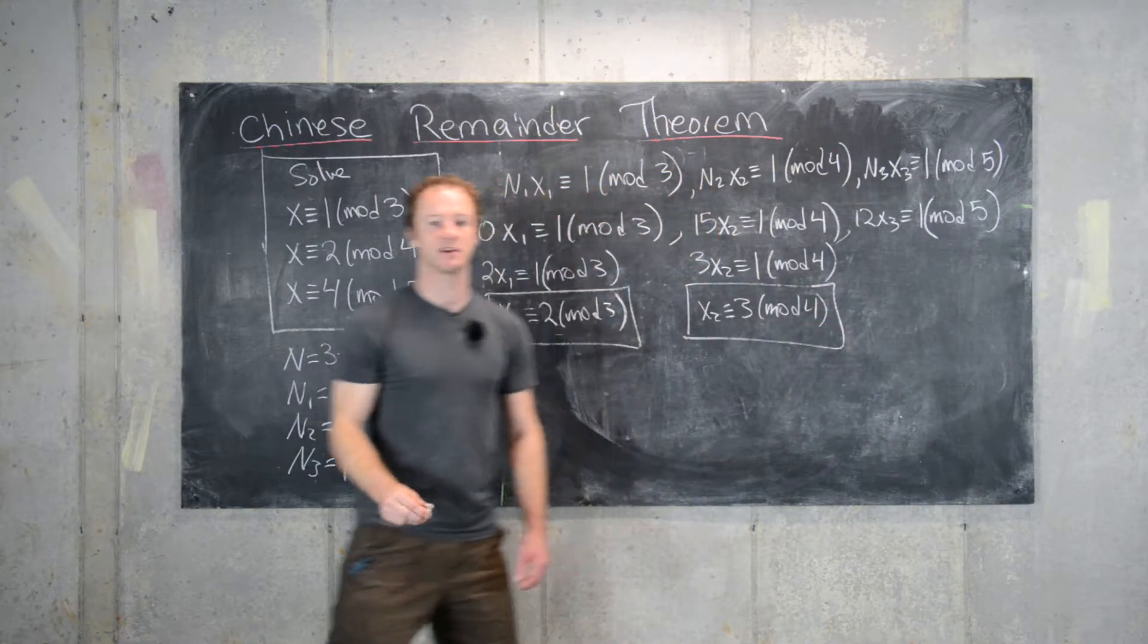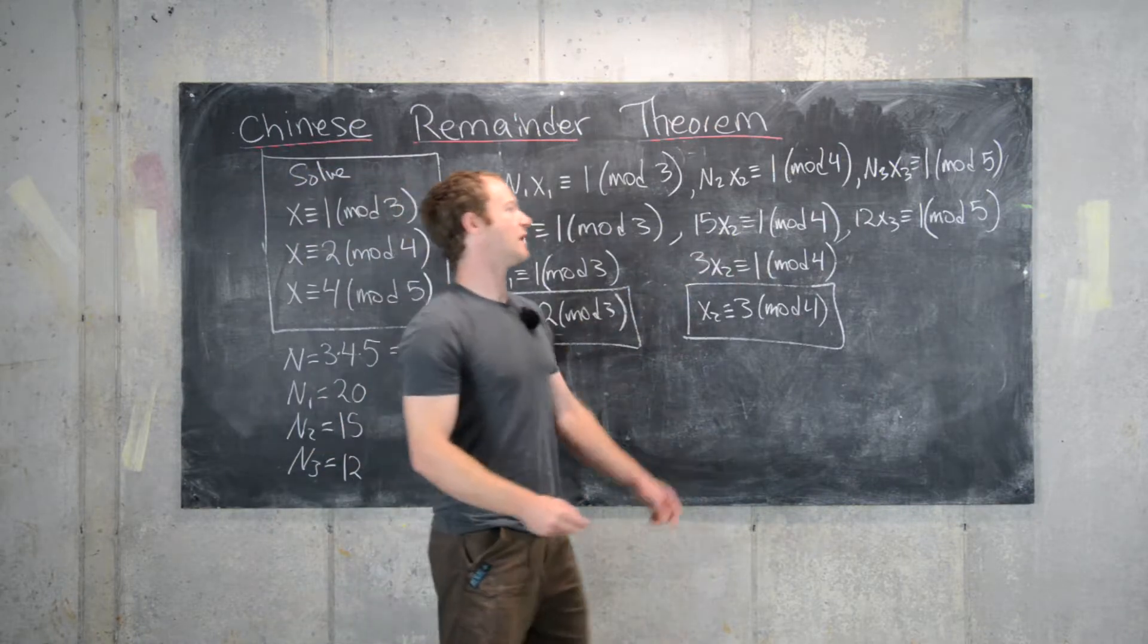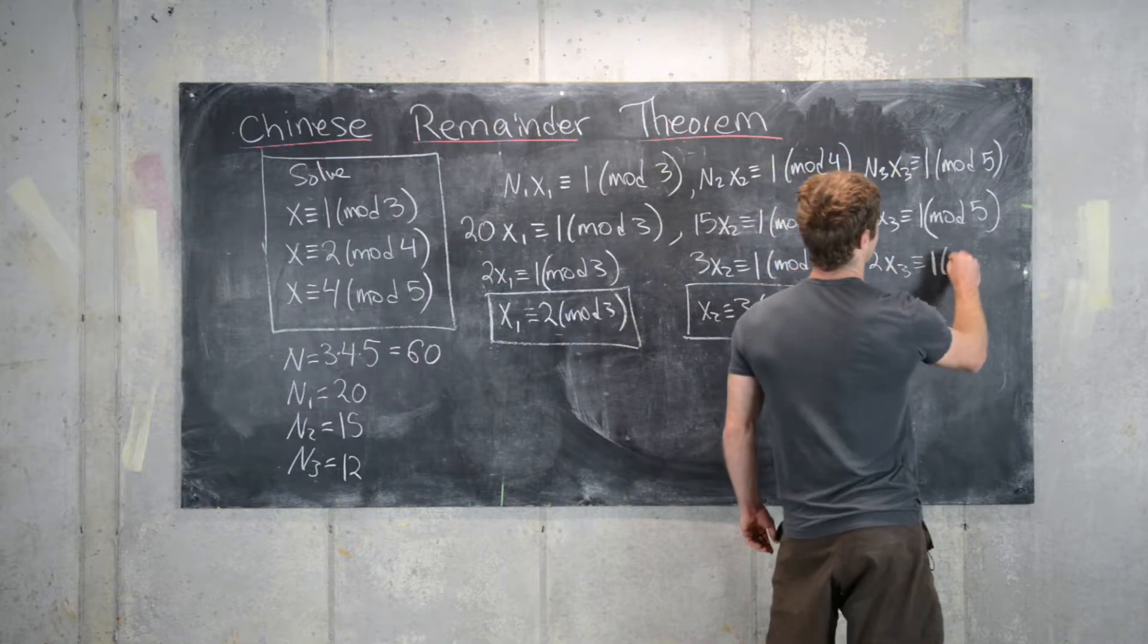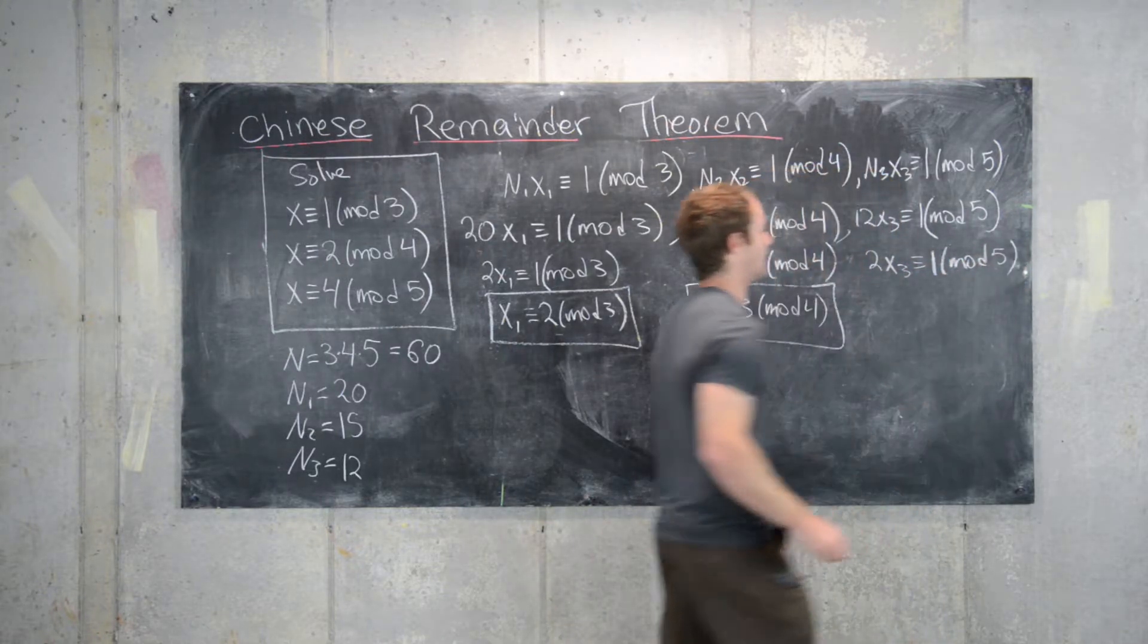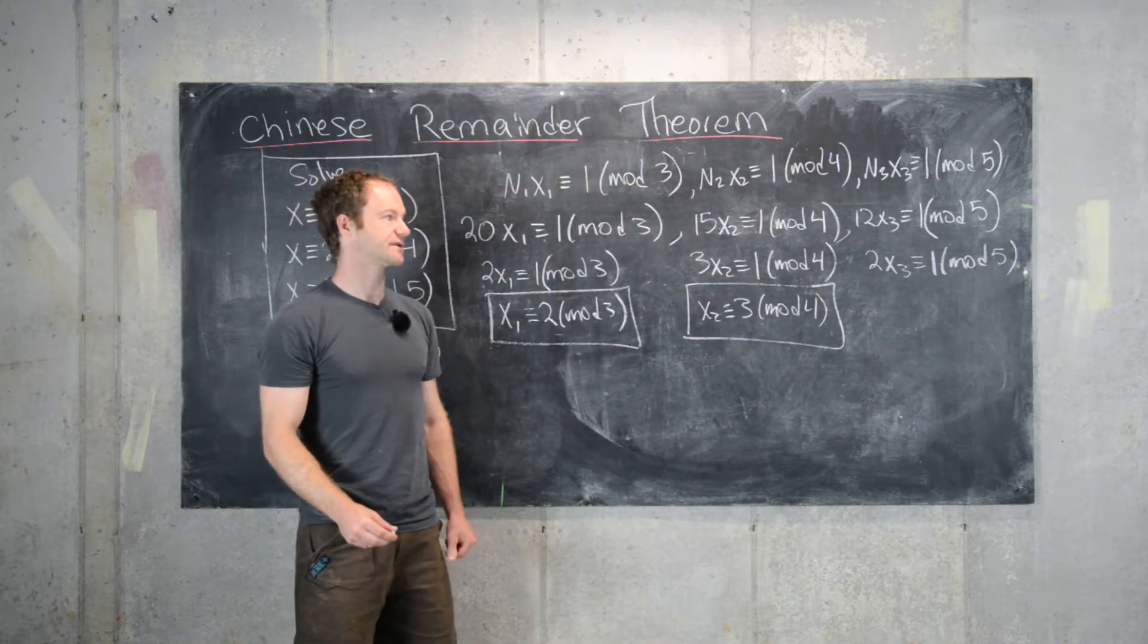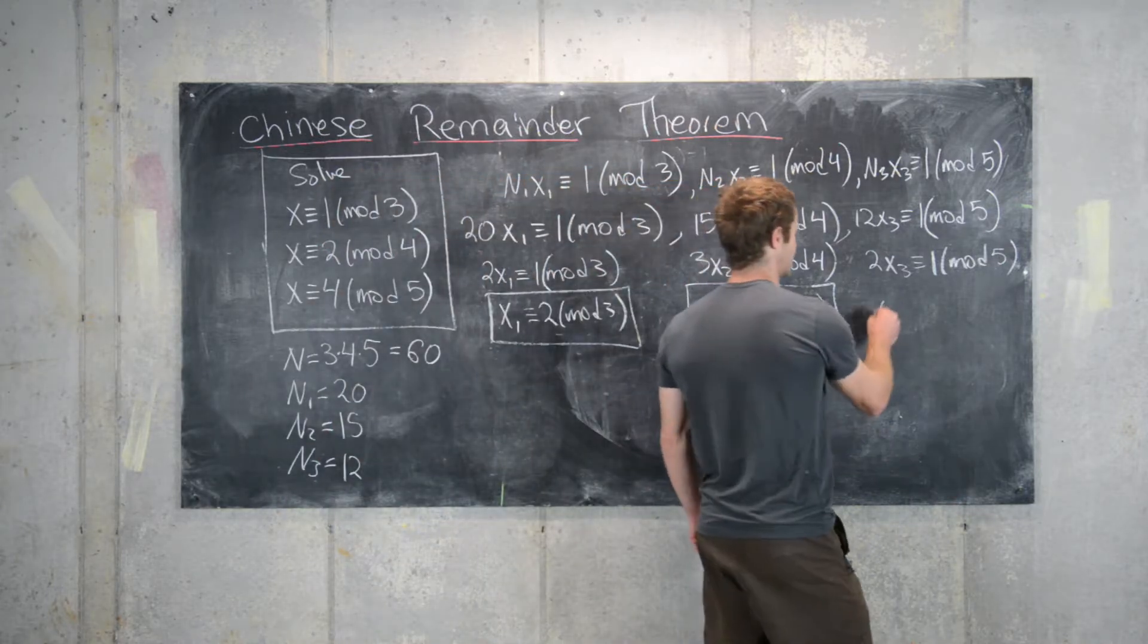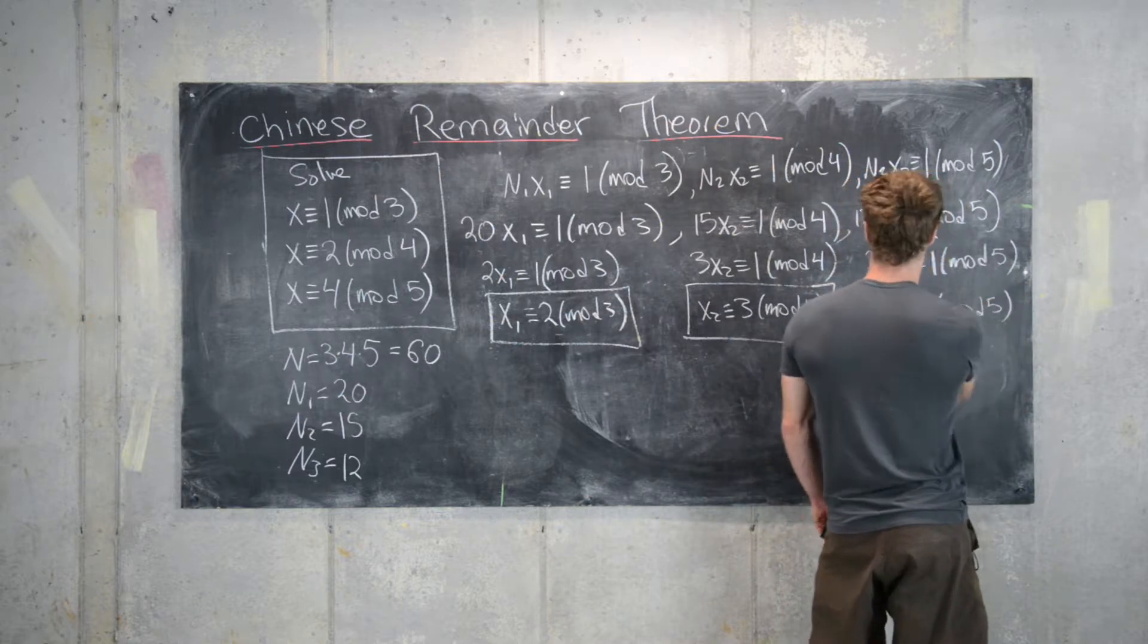And then finally, 12 is congruent to 2 mod 5, so we have 2x3 is congruent to 1 mod 5. We notice that 2 times 3 is equal to 6, and 6 is 1 mod 5, so that means x3 is 3 mod 5. So here we have x1 is 2, x2 is 3, and x3 is 3.